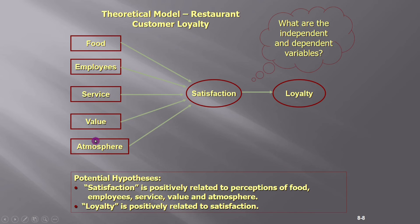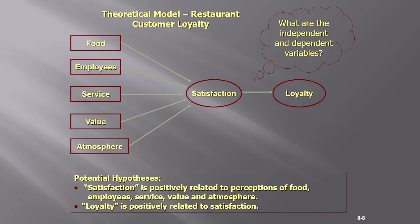After the hypothesis, we discuss the theoretical model. For example, I am going to take the restaurant customer loyalty model. Here, food, employees, service, value, and atmosphere are all independent variables, and satisfaction is the dependent variable. Potential hypotheses are: satisfaction is positively related to perceptions of food, employees, service, value, and atmosphere; and loyalty is positively related to satisfaction. In this way, you can make a theoretical model in any field — education, business, or medical — for conducting research.